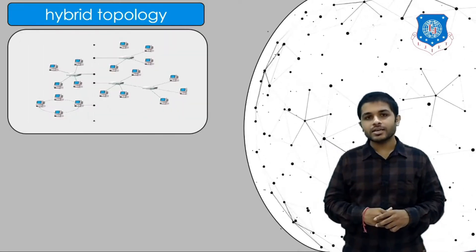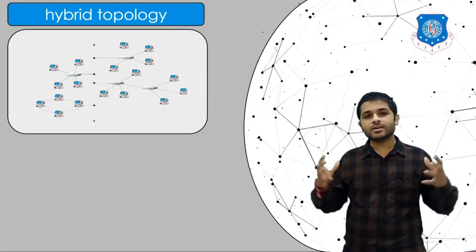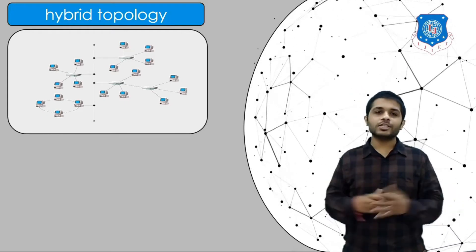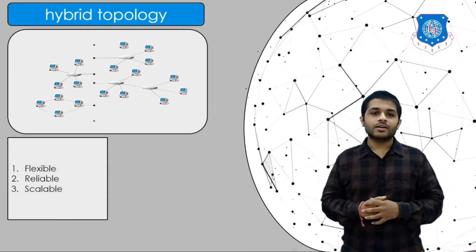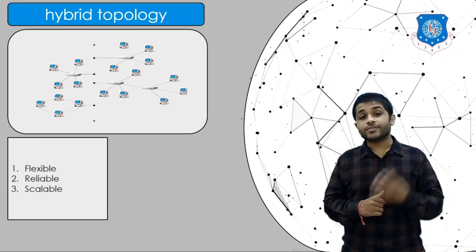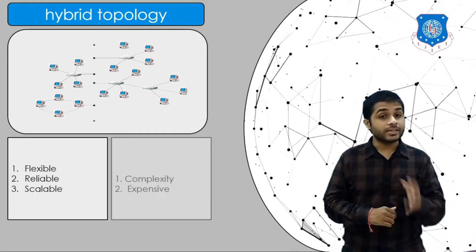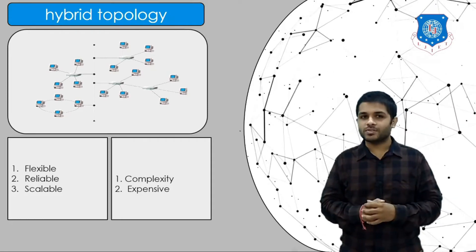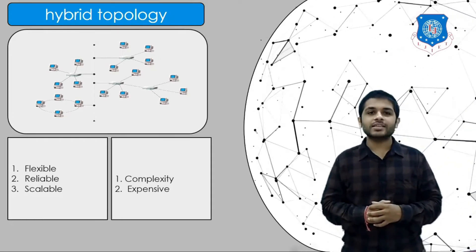The last topology is hybrid topology, which is a combination of all the topologies we have just seen. The advantages are that it is flexible, reliable, and scalable. The disadvantage is that it is more complex and expensive. The example of hybrid topology is the internet.